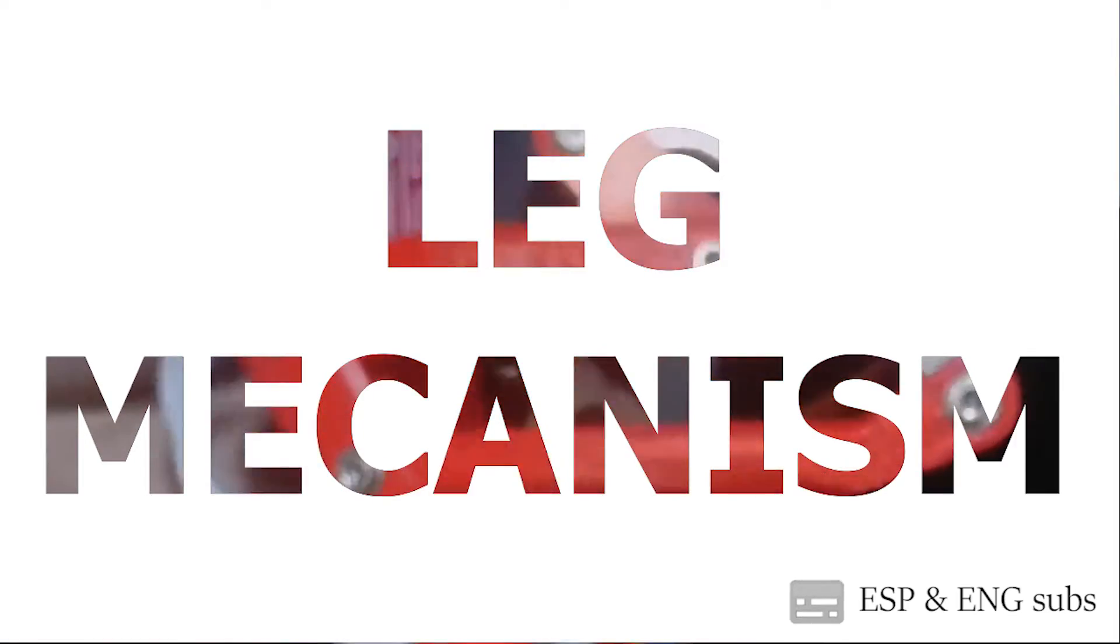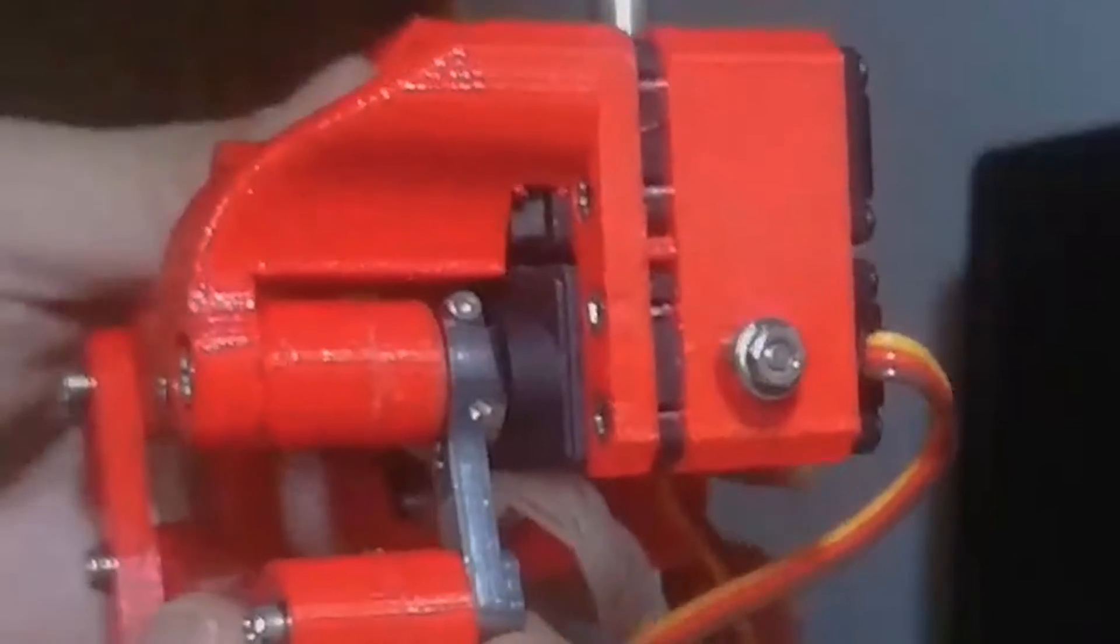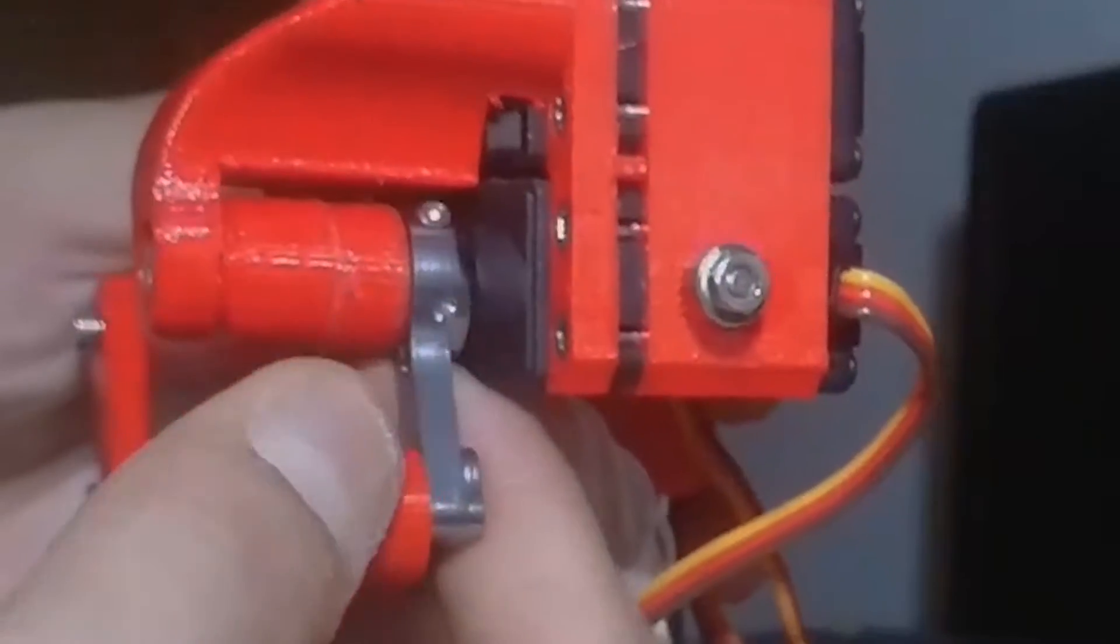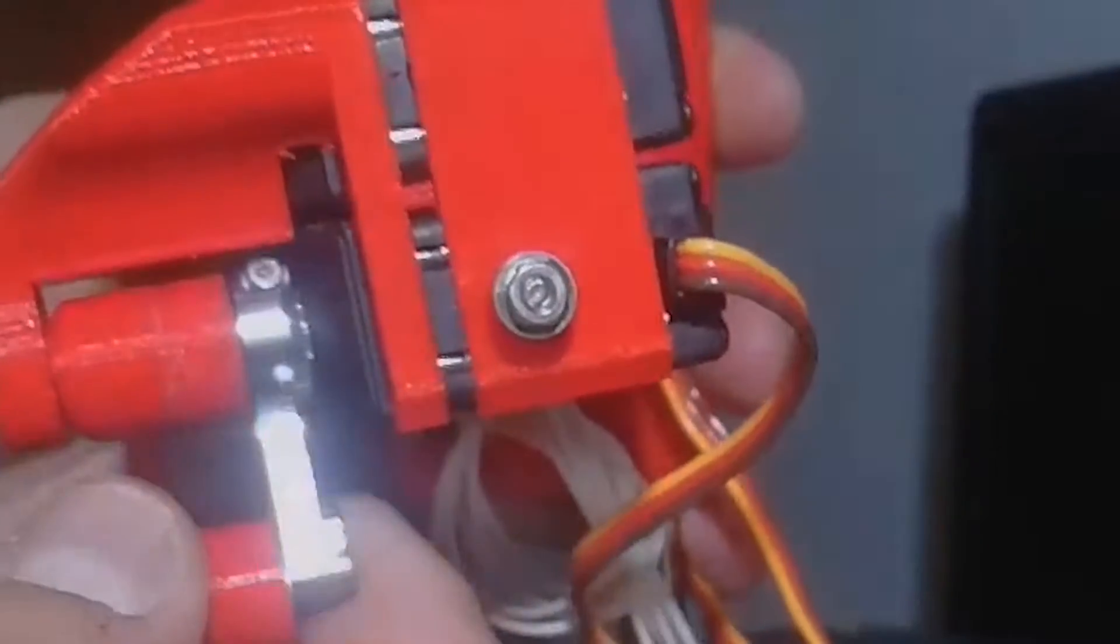Leg movement is based on a parallelogram mechanism. This avoids the use of joints like gears that can generate play on the structure. The source of backlash in this configuration comes only from the precision of bearings, the flexible nature of plastic, and servo gears.